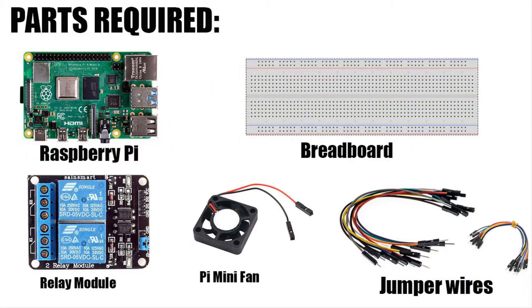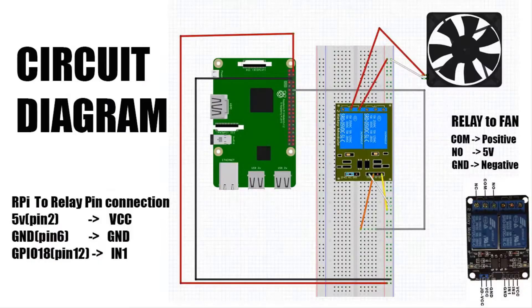Here are the hardware that you need for this setup: Raspberry Pi board, breadboard, relay module, Pi mini 5 volts fan, male to male and male to female jumper wires. Here is the circuit diagram.